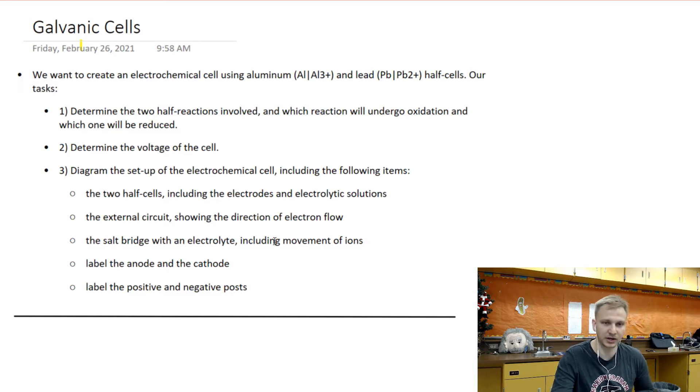So, just flip over here, we have this question that I've created. We want to create an electrochemical cell using aluminum, AL to AL3+, and lead, PB to PB2+, half cells.